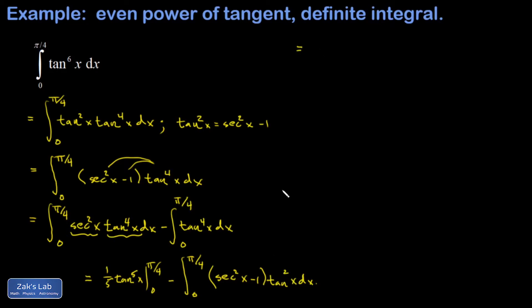I'm going to evaluate that first antiderivative across the limits of integration. The tangent of π/4 is 1 and the tangent of 0 is 0, so when I plug in the upper limit of integration I just get 1 to the fifth — so one-fifth times 1 to the fifth. When I plug in the lower limit I get zero.